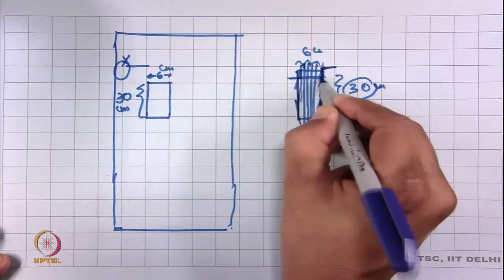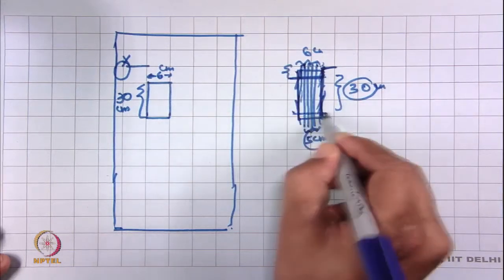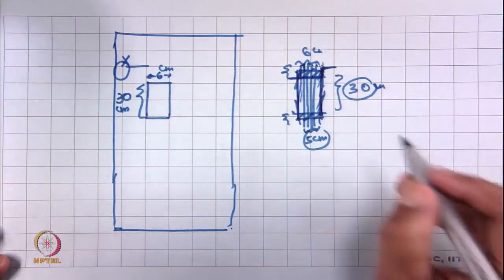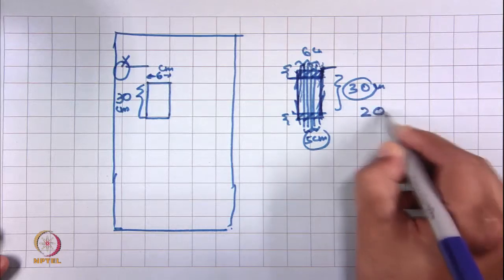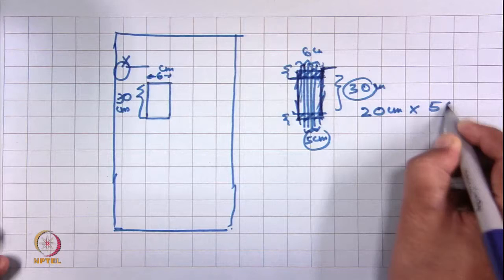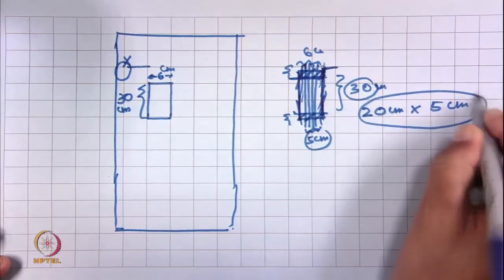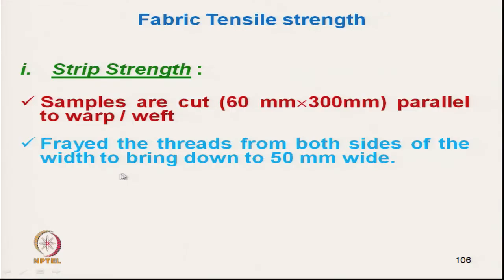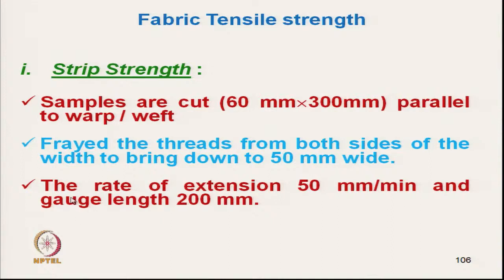5 centimeter from the top and 5 centimeter from the bottom will go under the jaw. So effectively it will become 20 centimeter in length and 5 centimeter in width. This is the effective specimen size between the jaws. Fraying the threads from both sides of the width brings the effective width down to 50 millimeter. The rate of extension is 50 millimeter per minute and the gauge length is 20 centimeter.